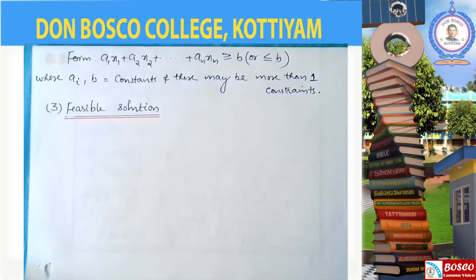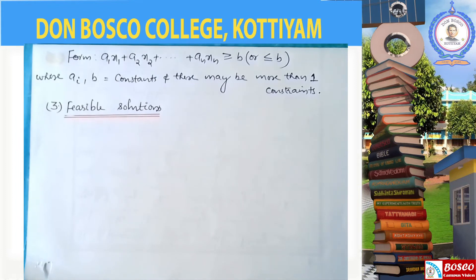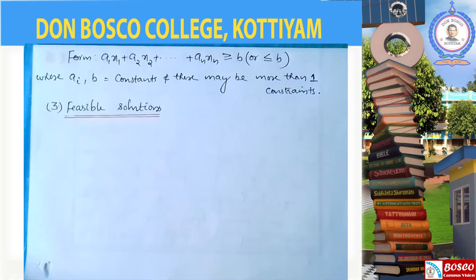The third ingredient is Feasible Solutions. A feasible solution is a solution to an LPP. In the general format, the variables are X1, X2, up to Xn.